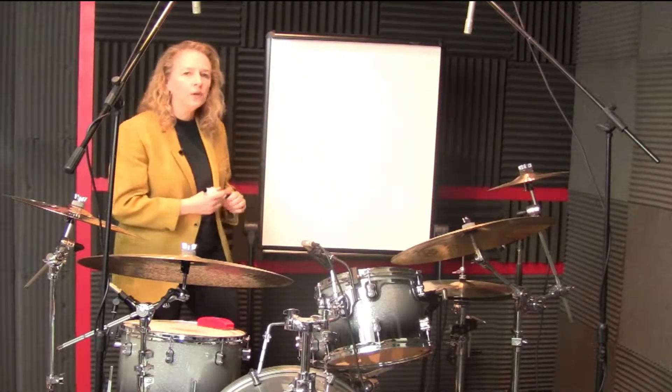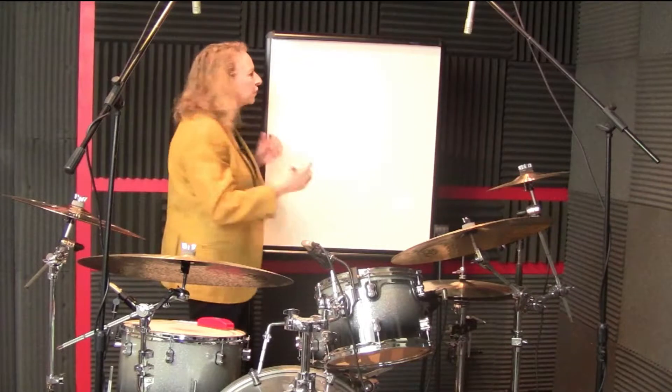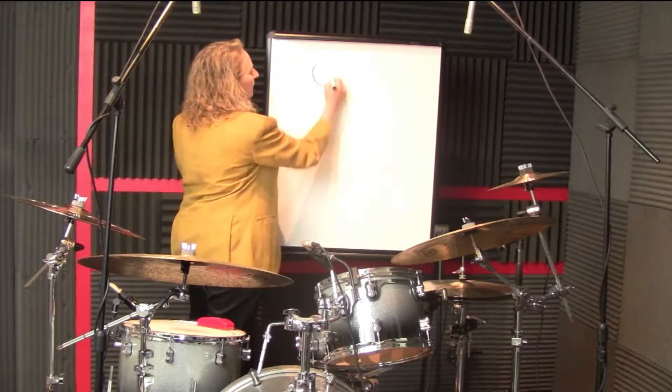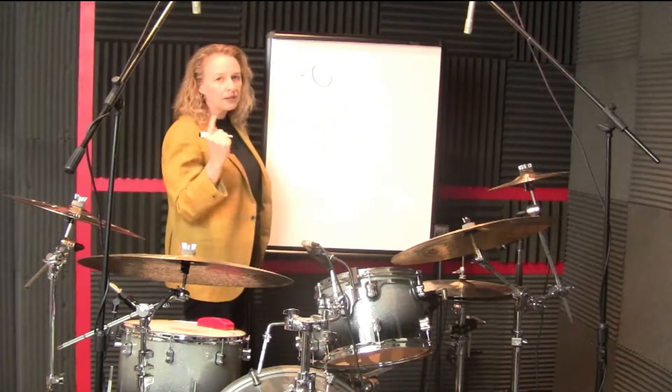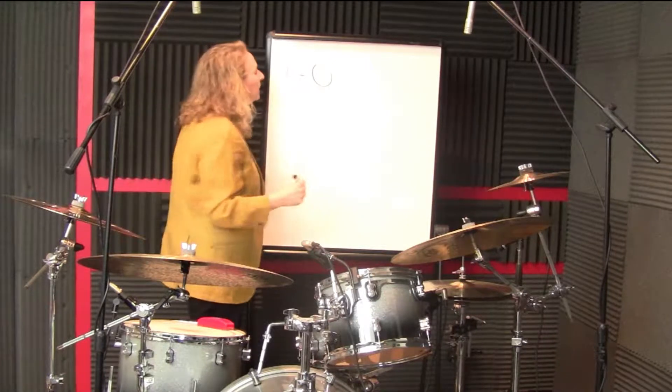Let's start out with the big note at the beginning of this whole series, which starts with the whole note. To draw the whole note, all you have to do is draw a circle. That circle is represented by the number one.